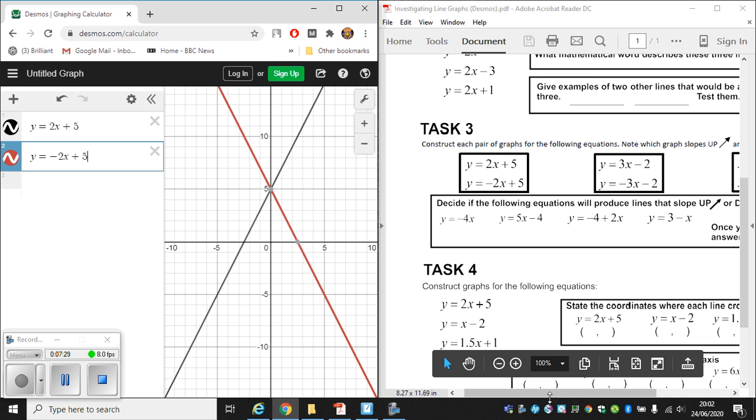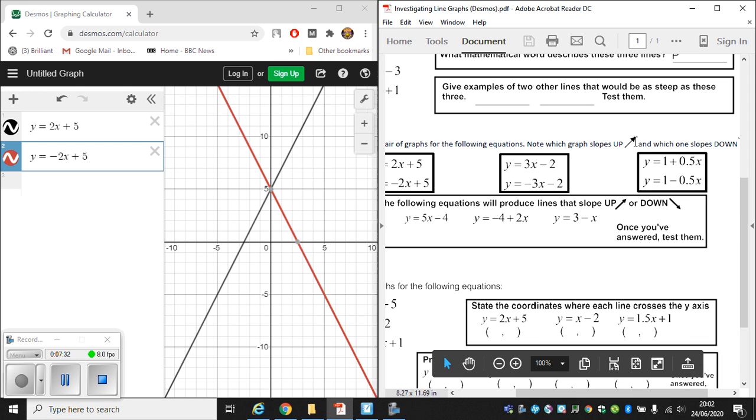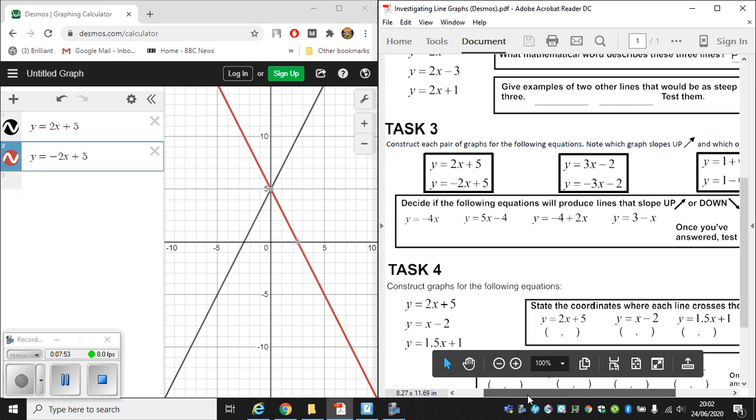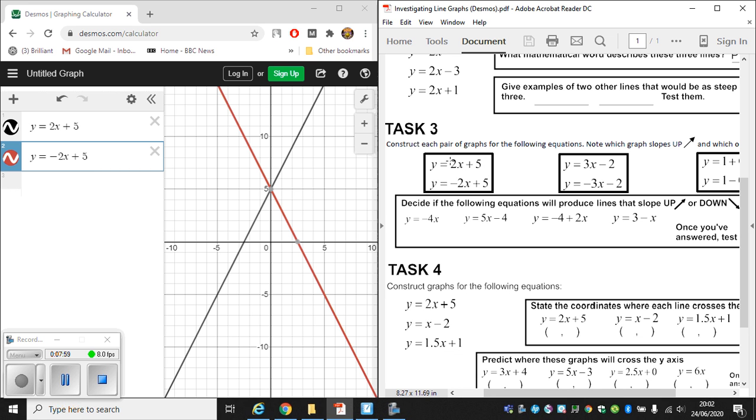And the task says note which graph slopes up and which slopes down. Out of the two, the first graph we produced, y equals 2x plus 5. That graph seems to be sloping upwards. And y equals minus 2x plus 5, that is a graph which slopes downwards. So what you can do if you're on the worksheet or make a note on paper. You can either draw next to the equations or write them down on paper which graph slopes up. So this first one slopes up. So I could draw a little upward arrow next to this one. And this one slopes down. So I could draw a little downward arrow next to that one.